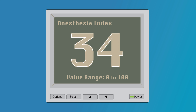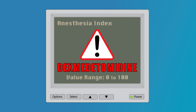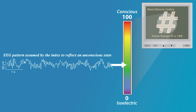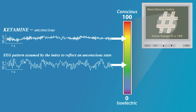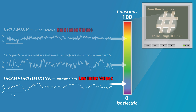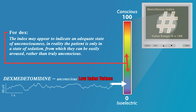Like ketamine, dexmedetomidine is an anesthetic that, when being delivered at clinically accepted doses, can result in misleading EEG index values from processed depth-of-anesthesia monitors. However, ketamine and dex are at opposite extremes. Ketamine's very active EEG pattern can produce higher index values, causing concerns about whether the patient is actually unconscious. Dex's prominent slow delta EEG activity can result in low index values. While the index may appear to indicate an adequate state of unconsciousness, in reality the patient is only in a state of sedation from which they can be easily aroused, rather than truly unconscious at a surgical level.